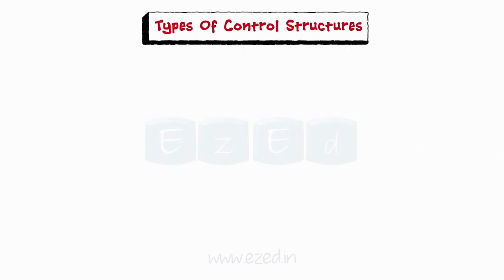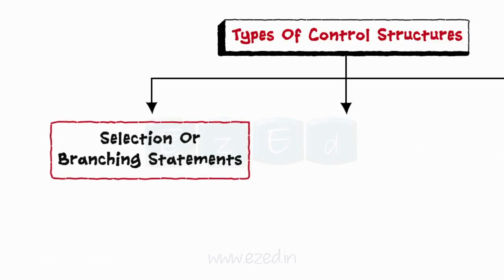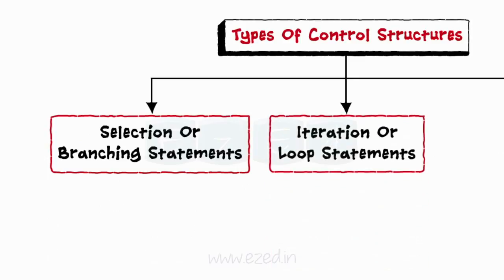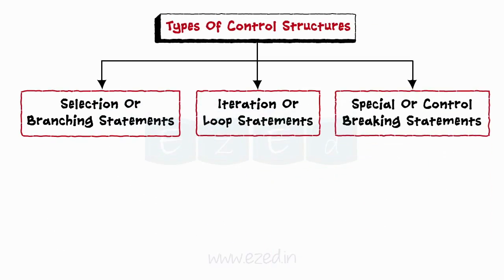There are three types of control structures in C: selection or branching statements, iteration or loop statements, and special or control breaking statements.